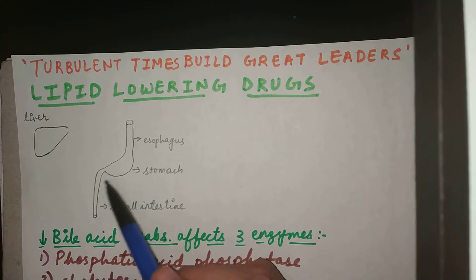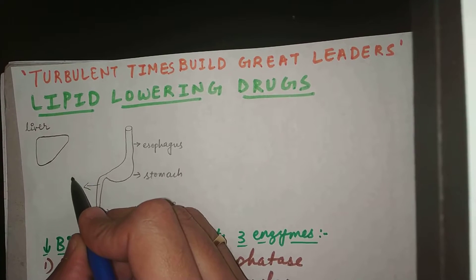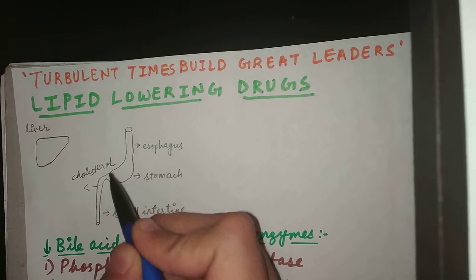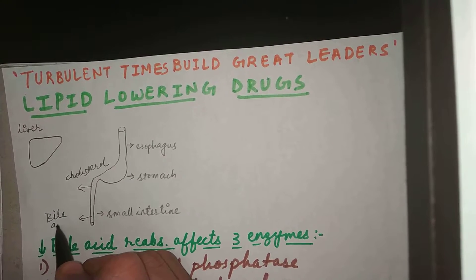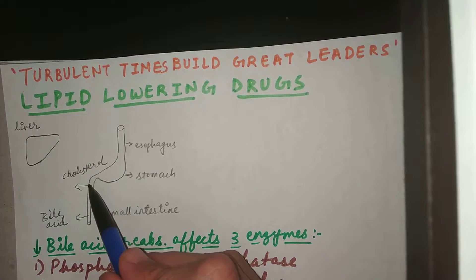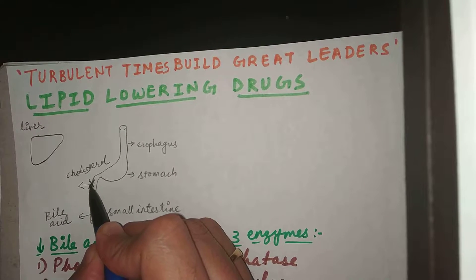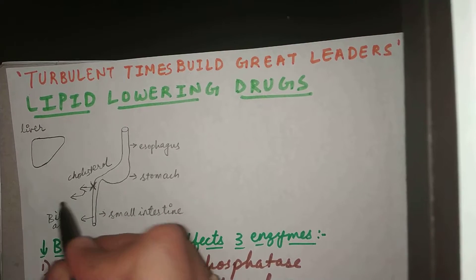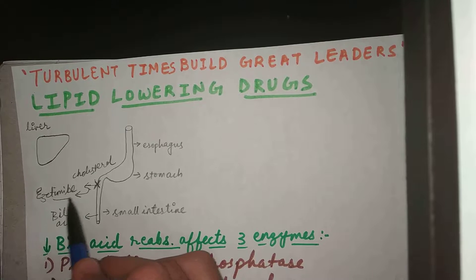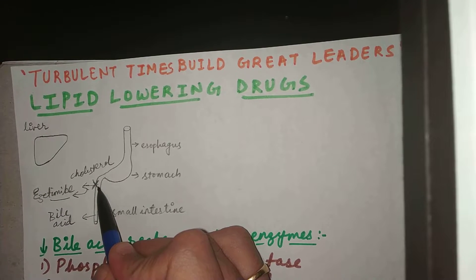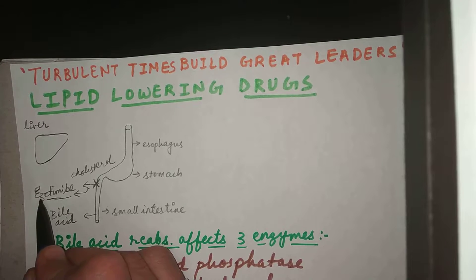Let's suppose this is our GI tract. Lipid is absorbed in the small intestine, so cholesterol is being absorbed here, and bile acid will be absorbed in the distal part of the small intestine. The easiest way to decrease cholesterol in the blood is to simply stop its absorption right there. The drug that does this is called ezetimibe. This is the easiest mechanism to lower cholesterol — no difficult mechanisms, no enzymes involved.